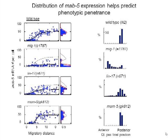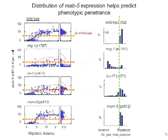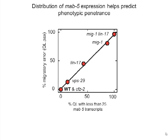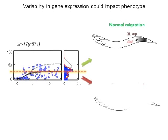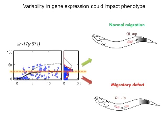For correct posterior migration to happen, a threshold of about 25 MAP5 transcripts appears to be necessary in the QL neuroblast. This is because within a given genotype, the fraction of animals that expressed less than this amount matched closely with the percentage of individuals displaying the mutant phenotype. These observations indicate that increasing gene expression variability could have a phenotypic impact on development.